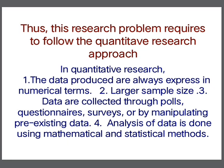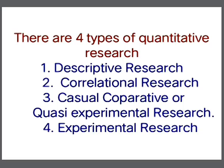Quantitative research data is expressed numerically. Whatever question is asked, you can identify it on the basis of these criteria. There are four types of quantitative research: number one, descriptive research; number two, correlational research; number three, casual-comparative or quasi-experimental research; number four, experimental research.